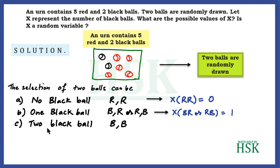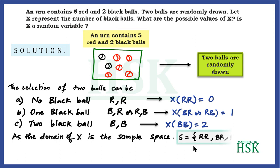And the third case: when both the balls are black, the value of the random variable would be equal to two. So this gives us that the domain of X is the sample space because we have calculated the value of this random variable X for all the sample points which are there in the sample space, because the sample space of the experiment in which the two balls are being drawn can have these following events.